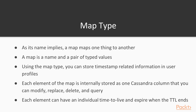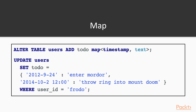Each element can have an individual time-to-live and expire when the time-to-live ends. We can add a map of timestamp to text to our users table — this will be a to-do structure. We can update a user with: UPDATE users SET todo = { date: value, date2: value2 } WHERE user_id = primary_key.